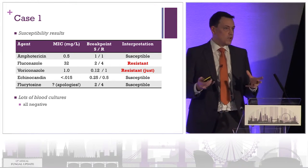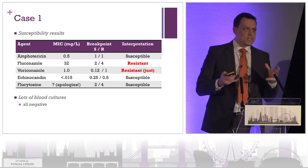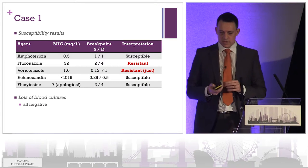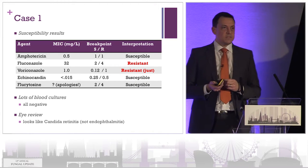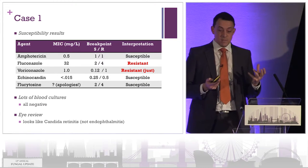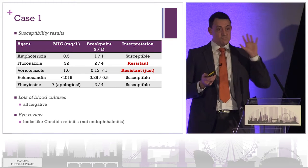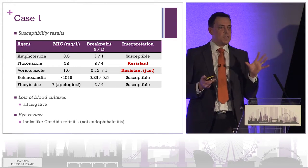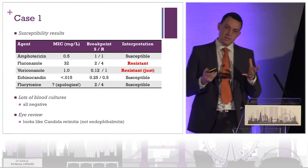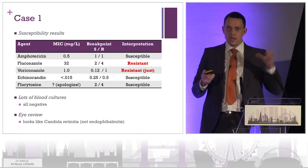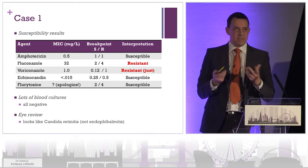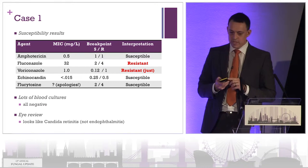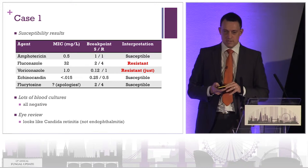We took lots of blood cultures — all negative — so we think he doesn't have a persistent candidaemia, although diagnostics aren't great. We asked the eye team to look in the back of his eyes, and they said this chap has a Candida retinitis, not a Candida endophthalmitis. The significance of that is that because the retina has a good blood supply, we can probably get away with systemic antifungal therapy rather than sticking needles in his eye.